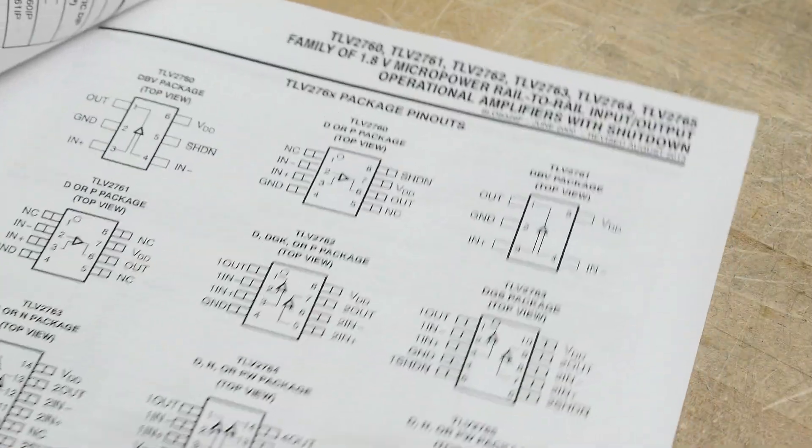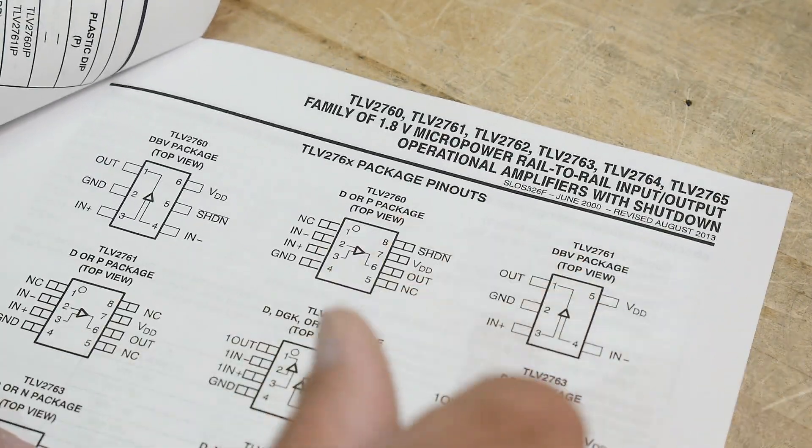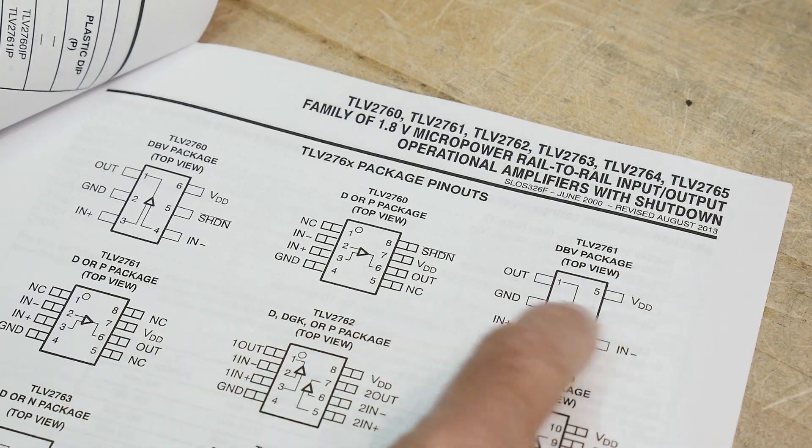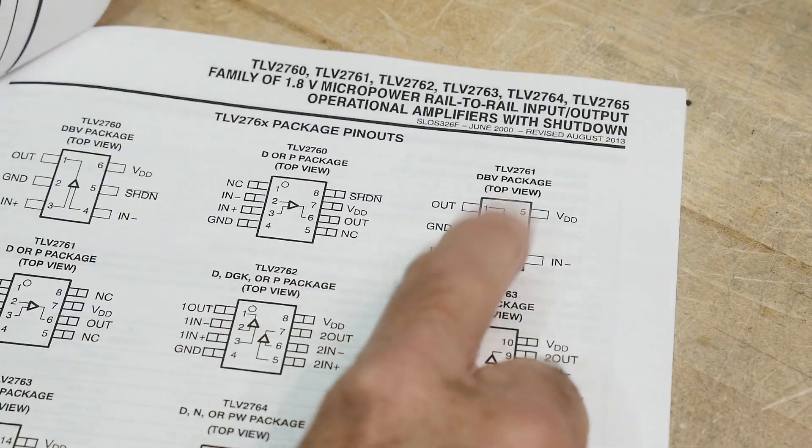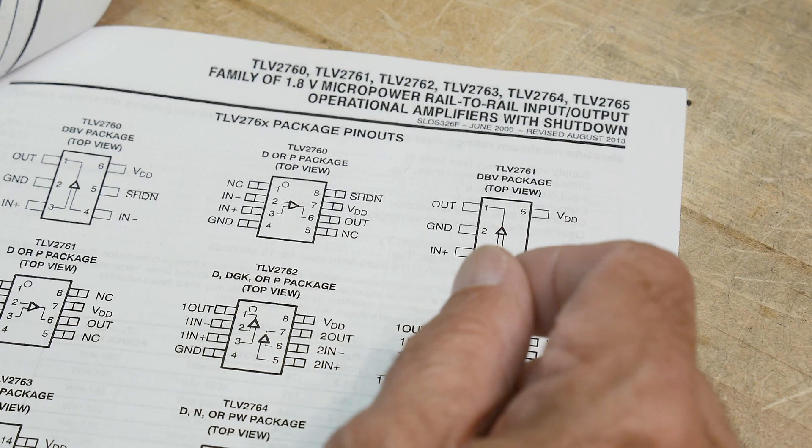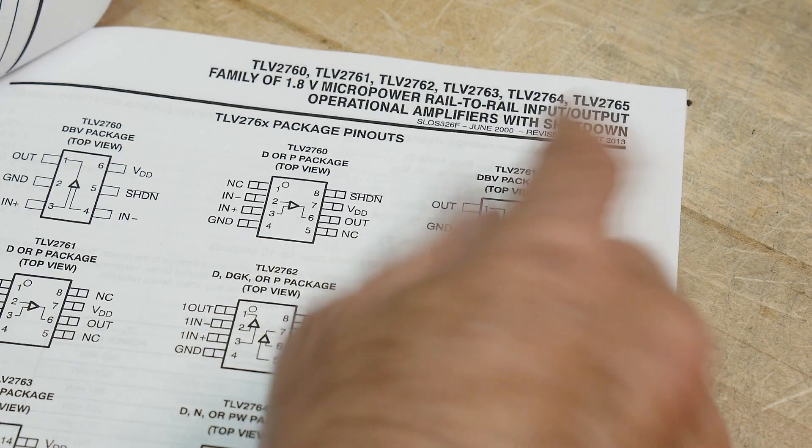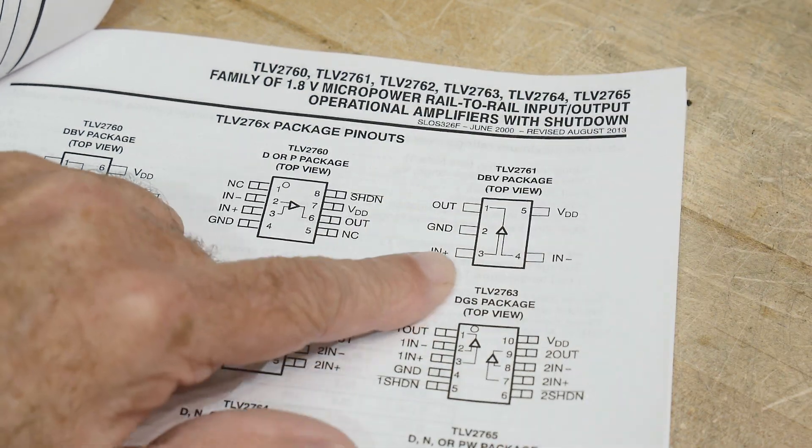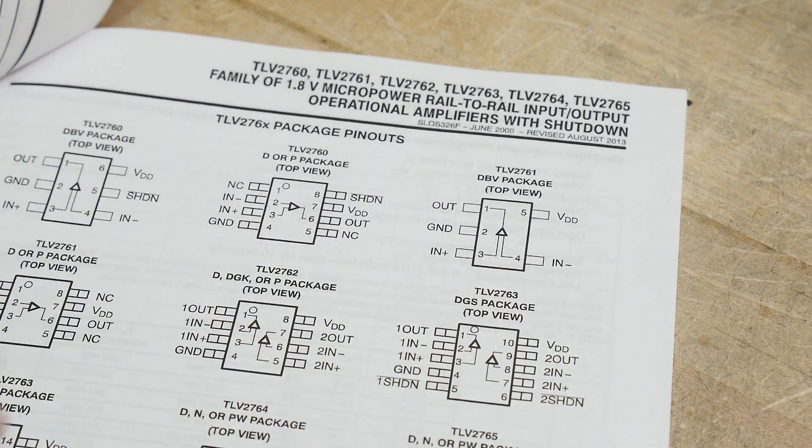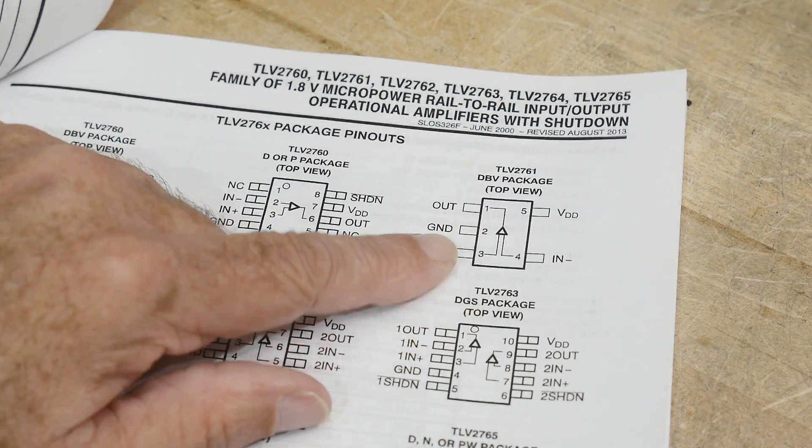I kind of like this one, cause it's, you know, these are teeny tiny little packages. These are like SO 23 dash five, or I don't know what those things are called. Anyway, those little things look like transistors, but they have five legs on them. So that would be a cool thing to have.